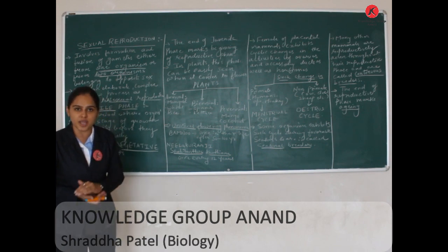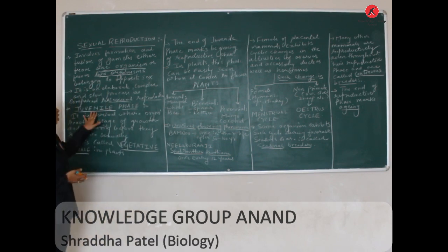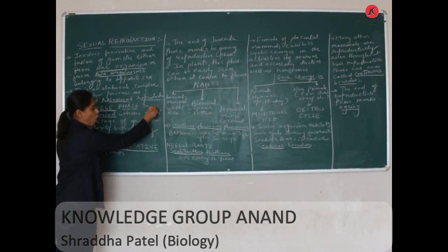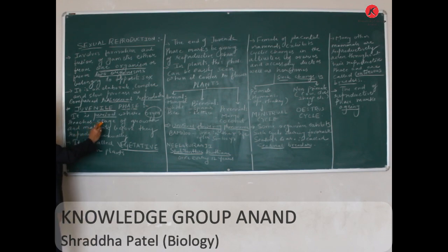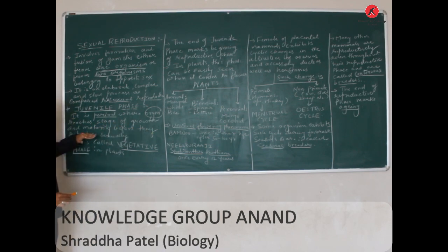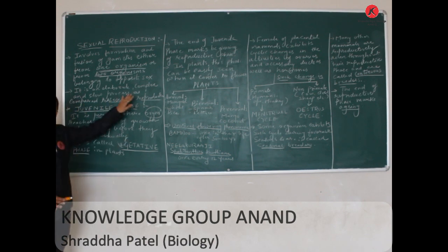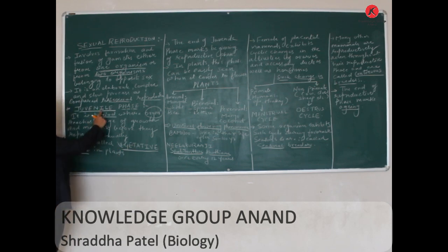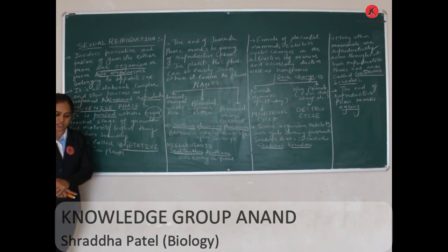This phase in animals is called the juvenile phase. The juvenile phase is the period during which an organism reaches the stage of growth and maturity before it reproduces sexually. In plants, the same phase is known as the vegetative phase.